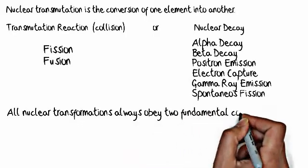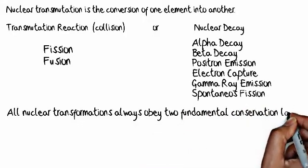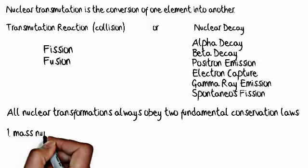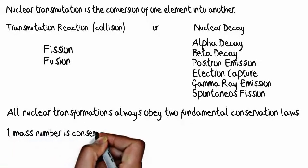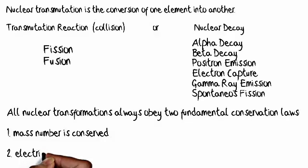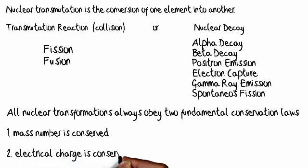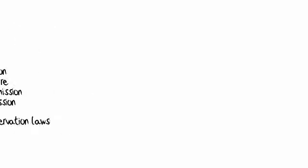All nuclear transmutations always obey two fundamental conservation laws. First, that the mass number is conserved, and second, that the electrical charge is conserved. Mass and charge are always conserved.